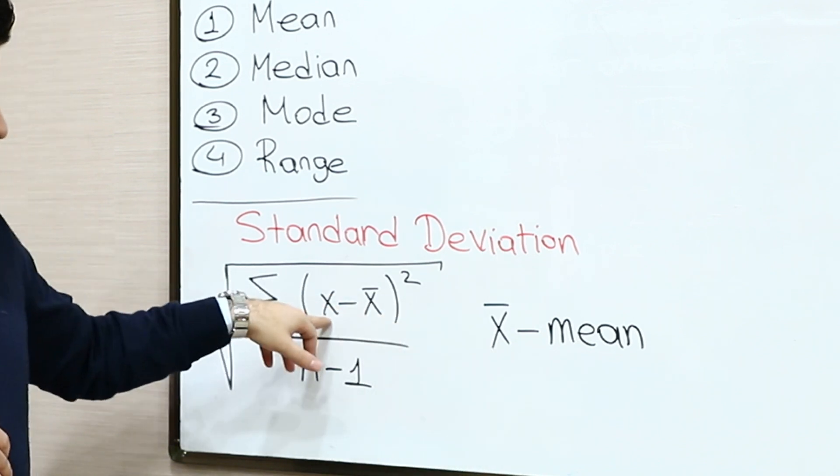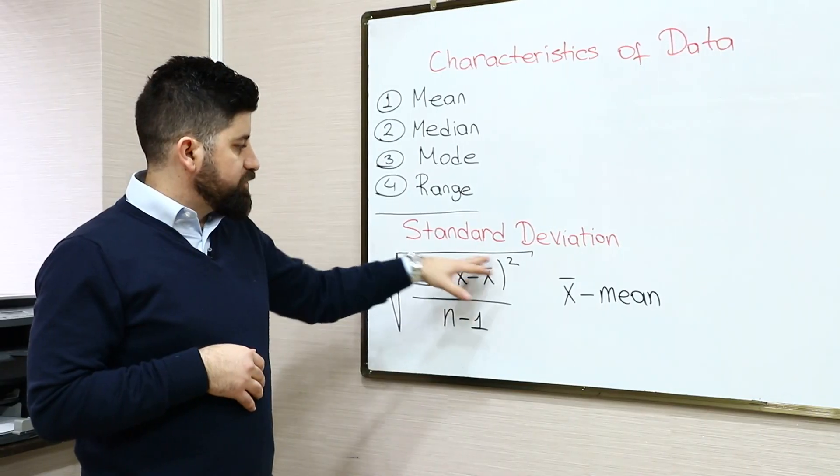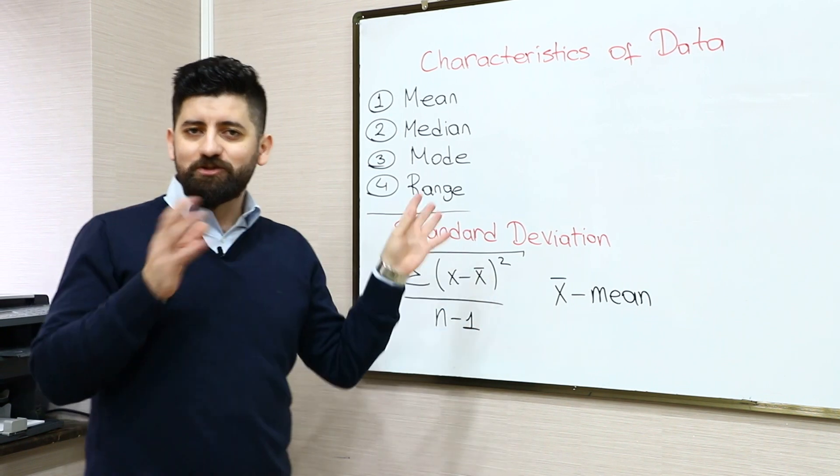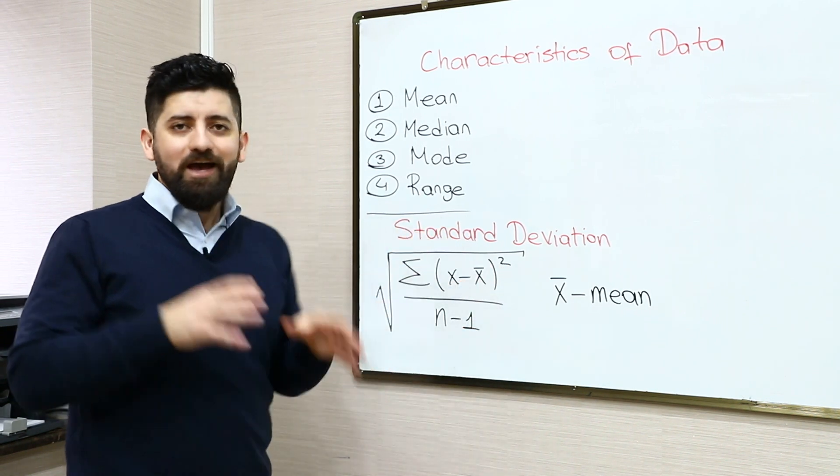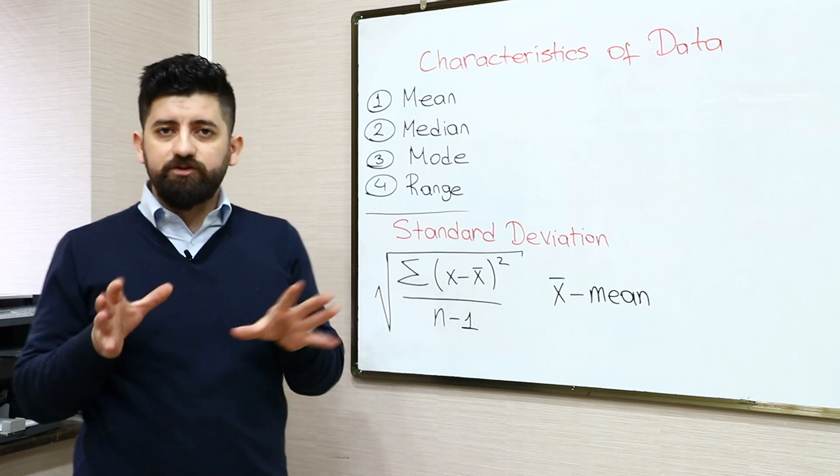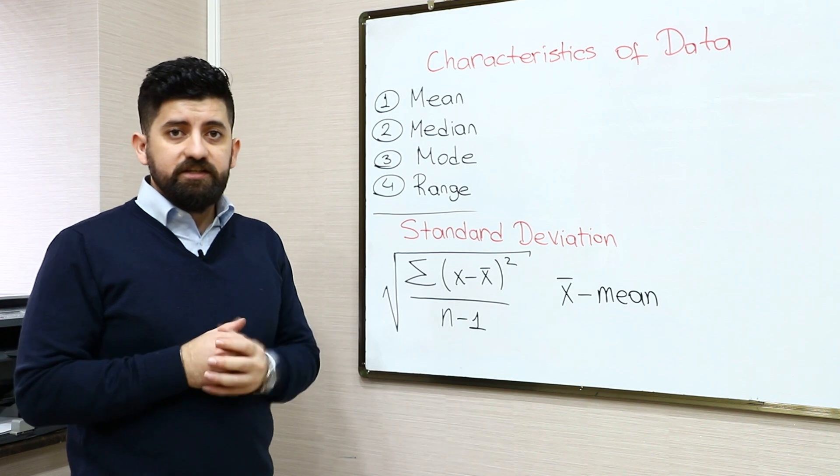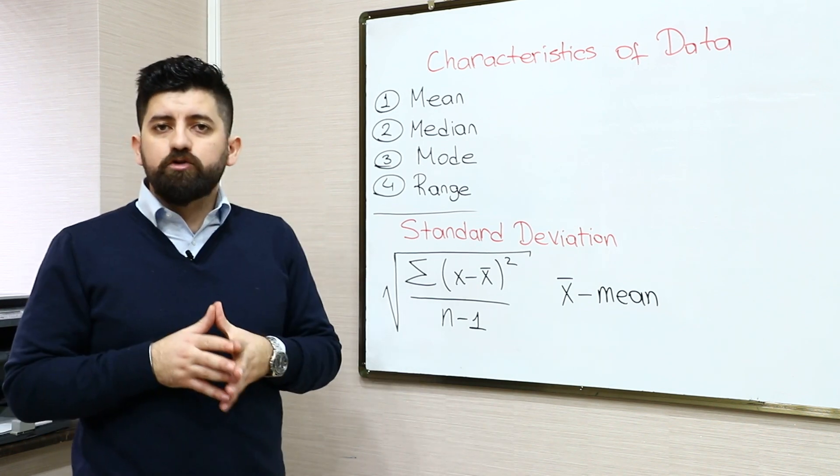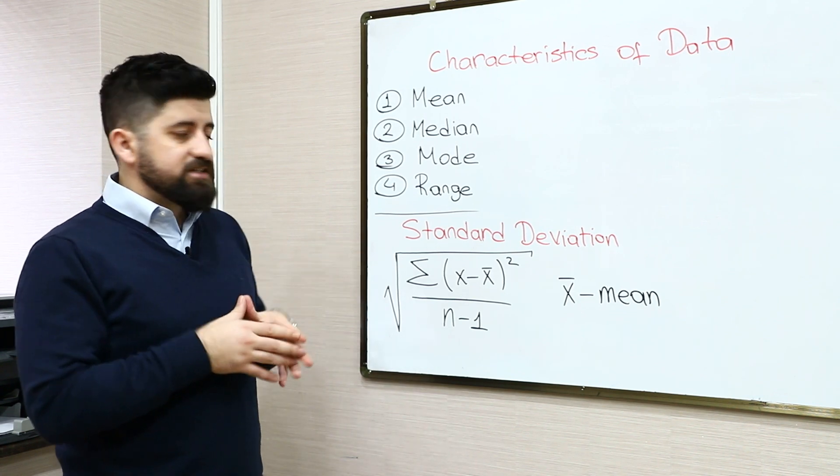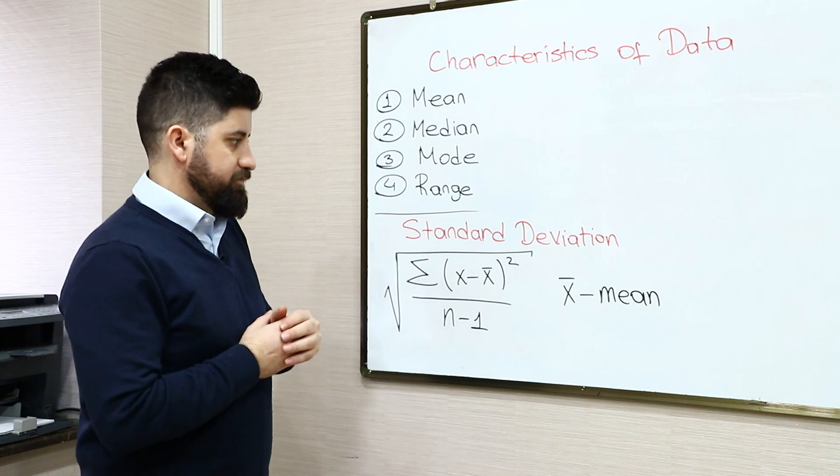This is the mean, and these are the numbers of the data. We need to sum up the differences of the squares and divide it by the number of them in square root. Actually, you don't need to know this formula because you are not required to solve such questions on SAT, but mostly you can come across comparing the standard deviations of data rather than calculating the standard deviation.